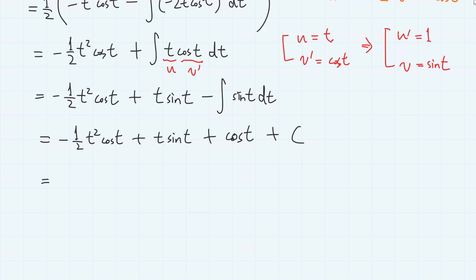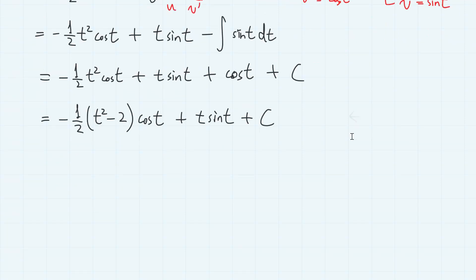And let's write it as minus 1 half t squared minus 2 cosine t plus t sine t plus c. And if we replace t with x squared, we have minus 1 half x to the power of 4 minus 2 cosine x squared plus x squared sine x squared plus c. So this is the antiderivative.